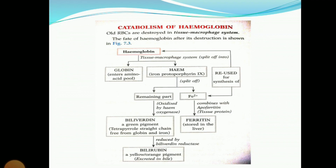The major discussion regarding jaundice will be done in our upcoming lectures on diseases related to blood. Let me give you a short description of jaundice. Jaundice is the yellow discoloration of the eyes, skin, and other body tissues, caused by excessive accumulation of bilirubin. If the serum bilirubin level rises above 2 mg/dL, it leads to jaundice. Further discussion will be done in the next lecture.